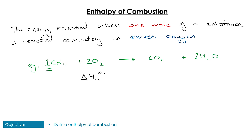The standard enthalpy of combustion — that's what the little theta sign is after the ΔHc sign, meaning it's done under standard conditions — is actually negative 891.8 plus or minus 1.1 kilojoules per mole.